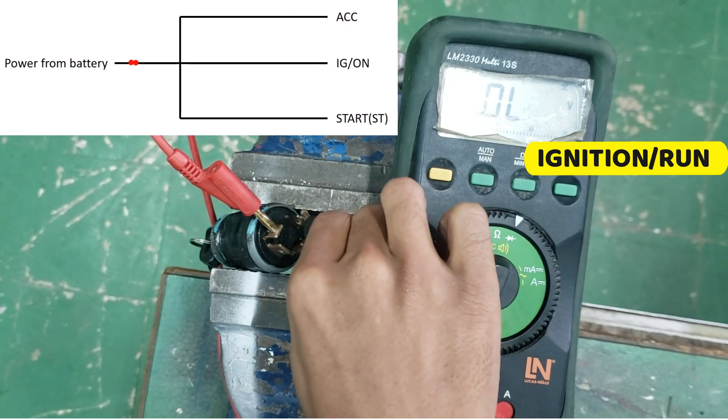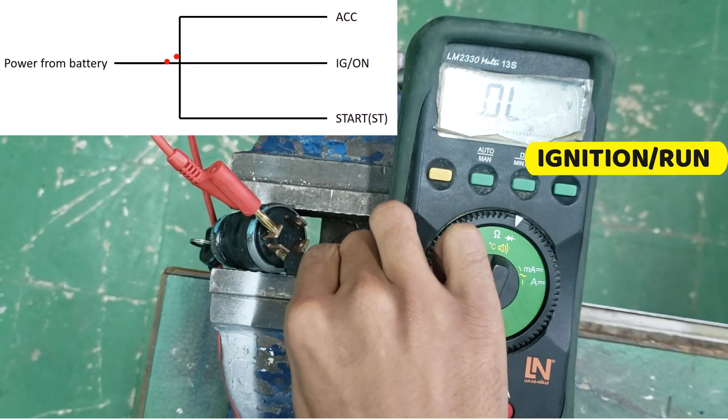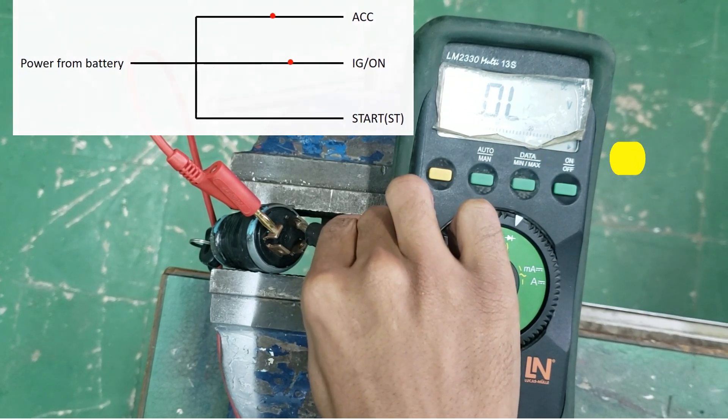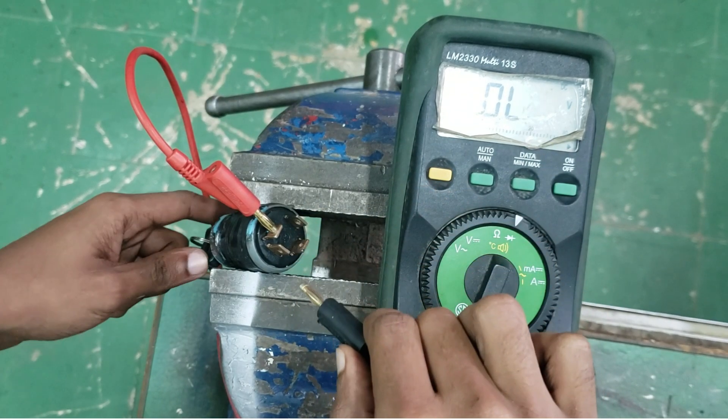The ignition or run position not only powers the accessories, but also the ignition and AC circuits. This allows the vehicle to be started and the climate control system to be operated.